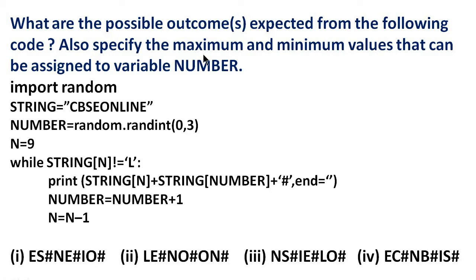First we will find out the maximum and minimum values for number. The variable number is assigned using random.randint(0, 3). This randint function will return a random integer from 0 to 3, both values included. So the minimum value that can be assigned to the variable number is 0, and the maximum value is 3.